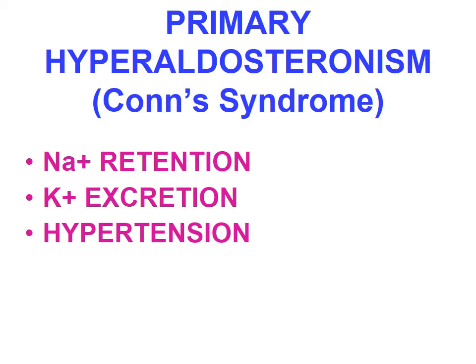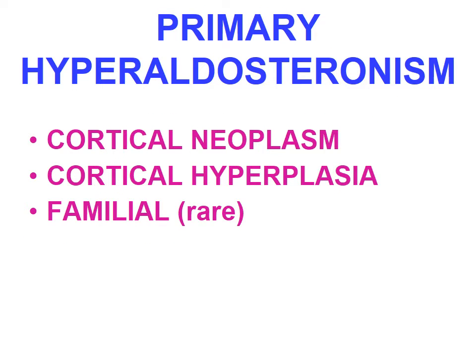Primary hyperaldosteronism is characterized by autonomous aldosterone secretion, leading to sodium retention and potassium excretion with resultant hypertension and hypokalemia. The renin-angiotensin system is suppressed and plasma renin activity is low. The causes include primary idiopathic hyperaldosteronism, which is the most common cause with unknown etiology at about 60 percent, followed by adrenocortical neoplasms in 35 percent of cases — either a solitary aldosterone-secreting adenoma or cortical hyperplasia — and rarely familial forms.